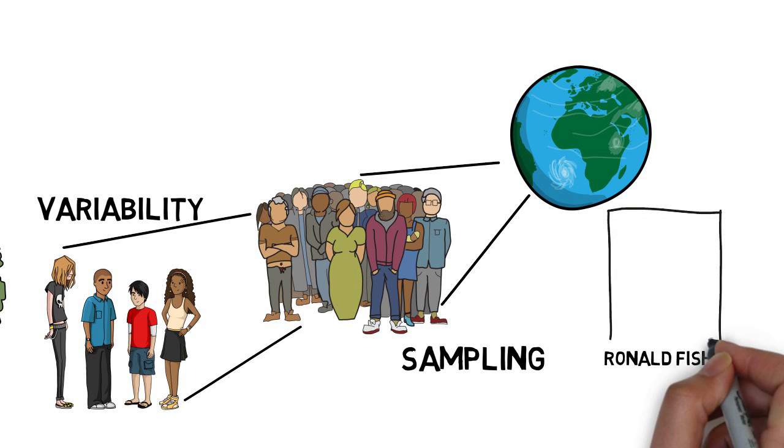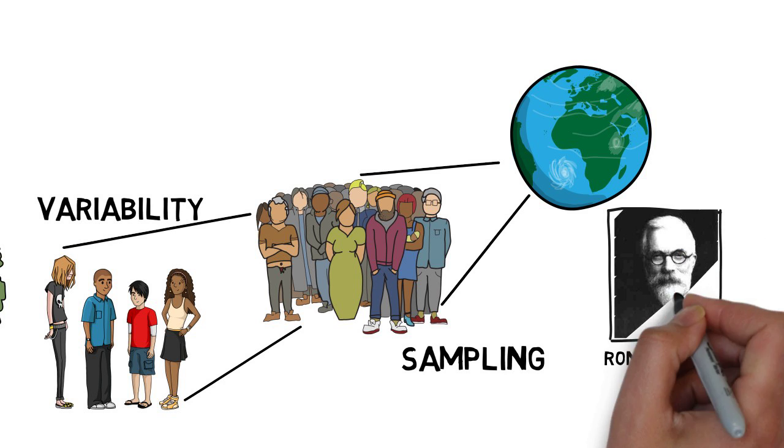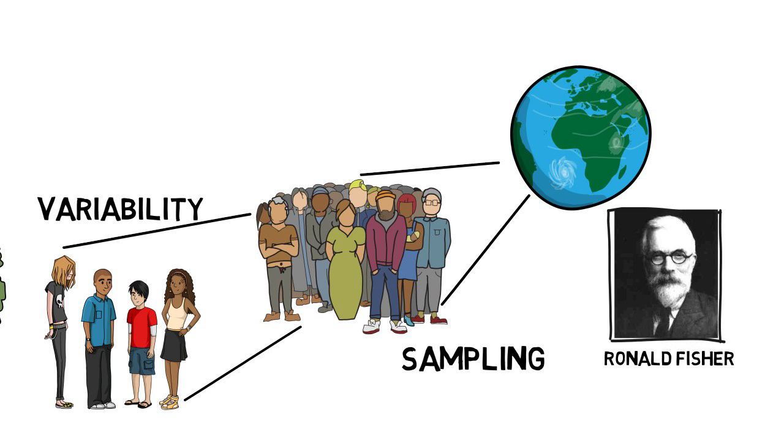How do we get round this? So this is the point where we meet Ronald Fisher, who is known as the father of modern experimental design, or at least the father of one of its main schools of thought. You may meet some of the others later in your degree.